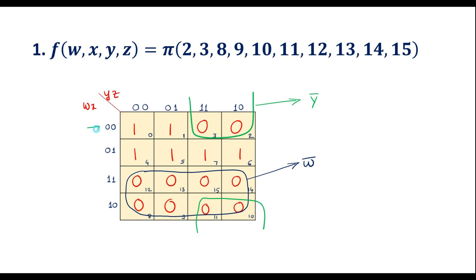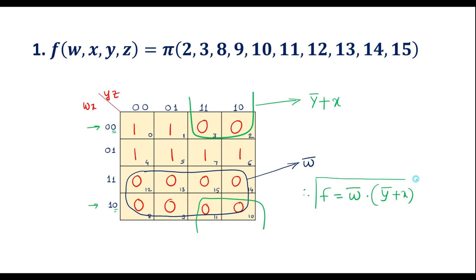In this row and this row, 0 is common. In max terms, 0 corresponds to the direct variable, so we use plus x. Therefore, the simplified boolean expression is: f = w-bar · (y-bar + x). This is the simplified boolean expression of the given function.